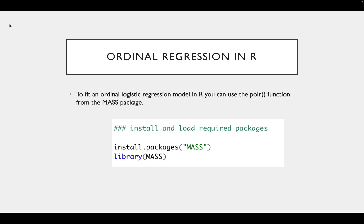To fit an ordinal regression in R, you can use the polR function from the MASS package. To do this, you'll need to install and load this package to be able to run the code.